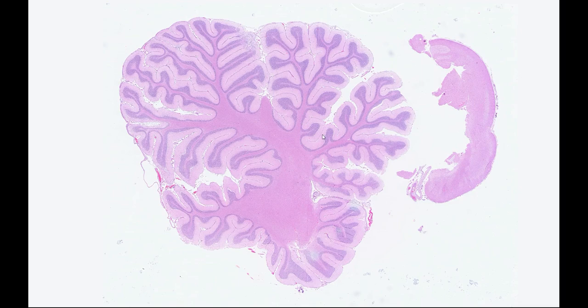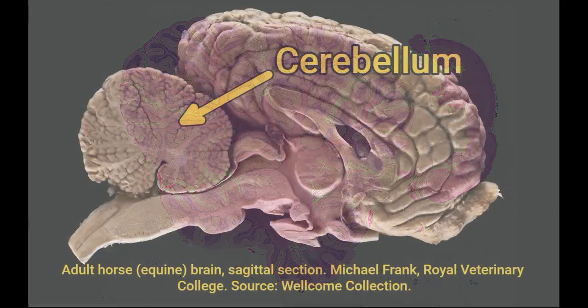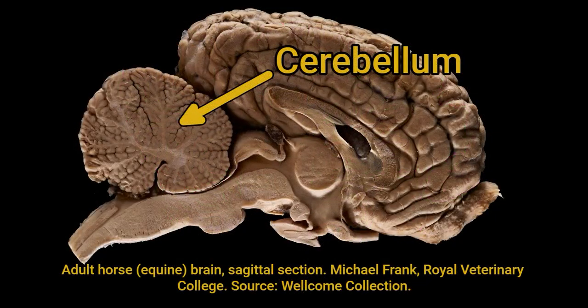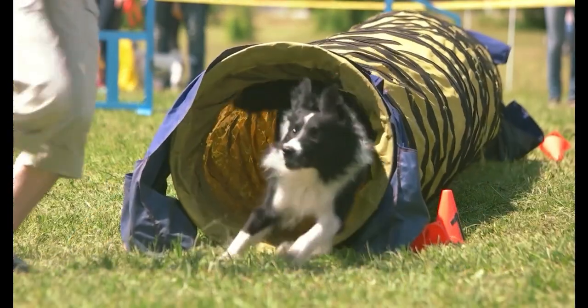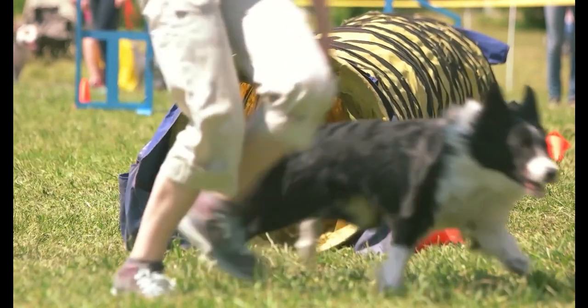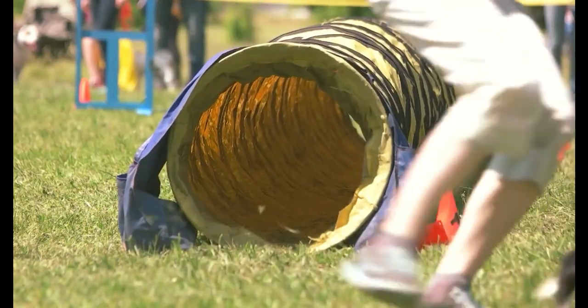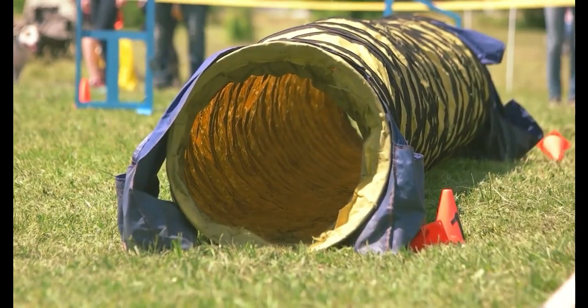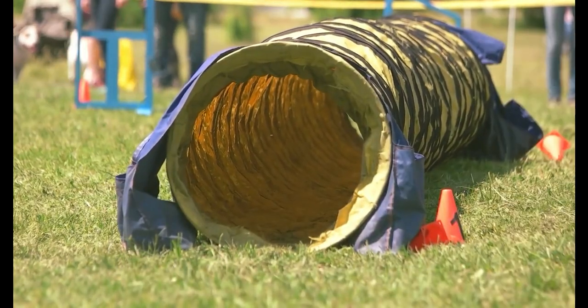Hello and welcome to Down the Scope. Today we'll be looking at the histology of the cerebellum. The cerebellum is located at the back of the brain and looks a bit like a cauliflower when you split it down the middle. The function of the cerebellum is to coordinate movement, maintain posture and balance.